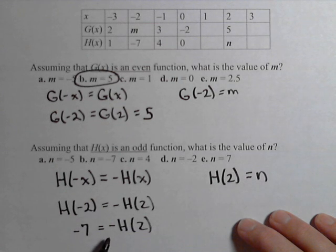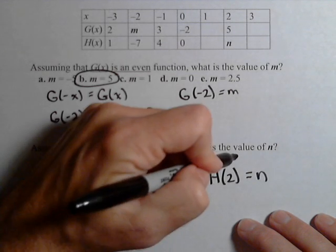So we're almost there. The only thing we need to do is multiply both sides by negative one. So h of two equals a positive seven.